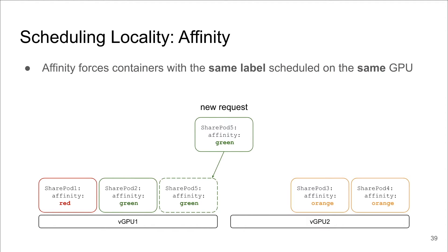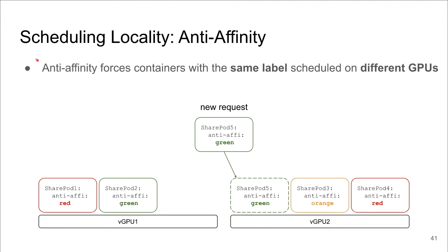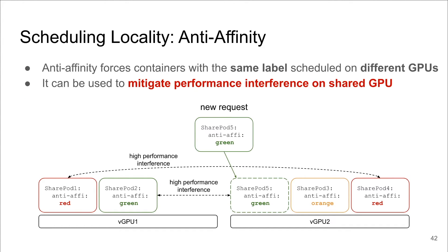KubeShare supports three types of locality labels. First is affinity, which forces containers with the same label to be scheduled on the same GPU. For example, if SharedPod 2 and SharedPod 5 both have the same green affinity label, they must be scheduled on the same vGPU. A use case for affinity is to co-locate jobs with high communication and data transfer on the same vGPU for better performance. In contrast, anti-affinity forces containers with the same label to be scheduled on different GPUs. If SharedPod 2 and SharedPod 5 share the same anti-affinity label, they cannot be on the same vGPU — since SharedPod 2 is on vGPU 1, SharedPod 5 is scheduled on vGPU 2. Anti-affinity can be used to avoid pods with high resource contention from sharing the same vGPU, mitigating performance interference under GPU sharing.